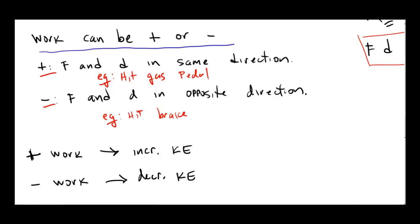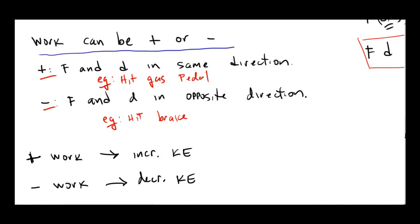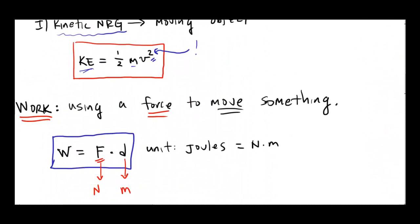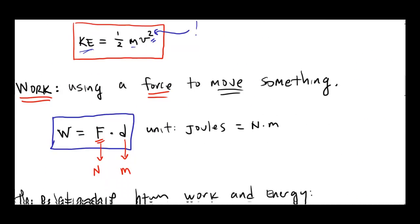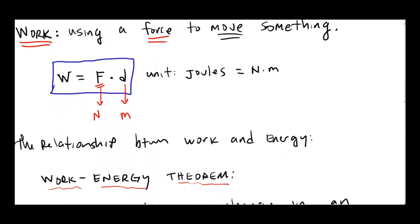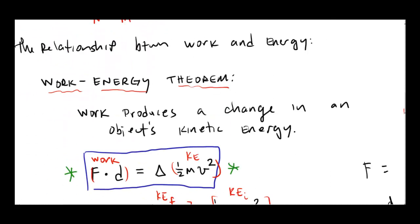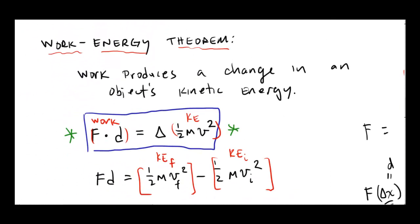That's a fair amount of information. We defined kinetic energy, talked about work as using a force to move an object, and looked at the work-energy theorem — doing work on an object produces a change in kinetic energy. Positive work increases kinetic energy; negative work decreases it. We'll practice this next class.